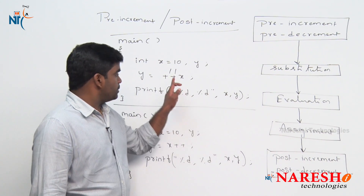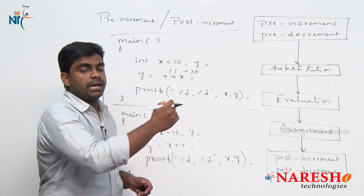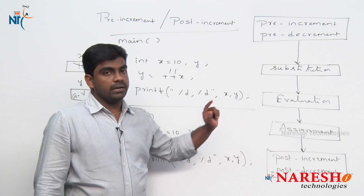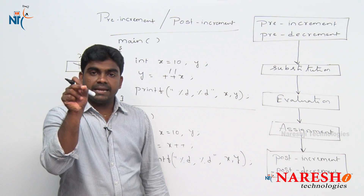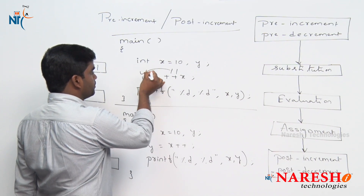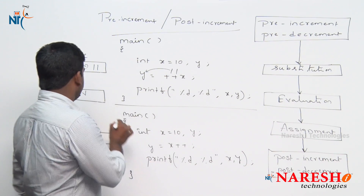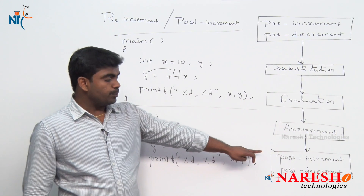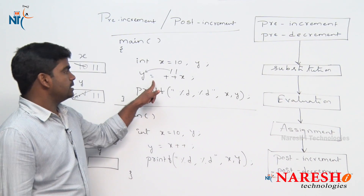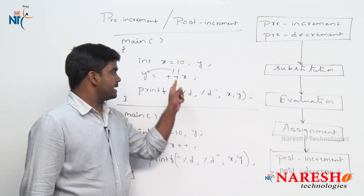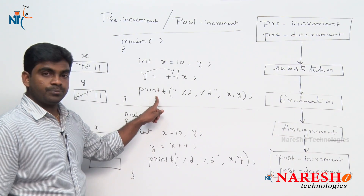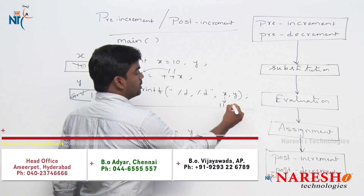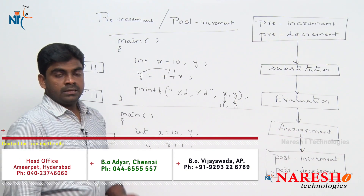Step 3: evaluation — suppose if there were any additional terms we would evaluate according to priorities, but here there is nothing to evaluate, so skip this step. Step 4: assignment — assign the value 11 to y; y's garbage value is replaced with 11. Step 5: post-increment or post-decrement — nothing here. Expression execution is complete. In the next step, printing x and y: x is 11, y is 11. So the output of Program 1 is x = 11 and y = 11.